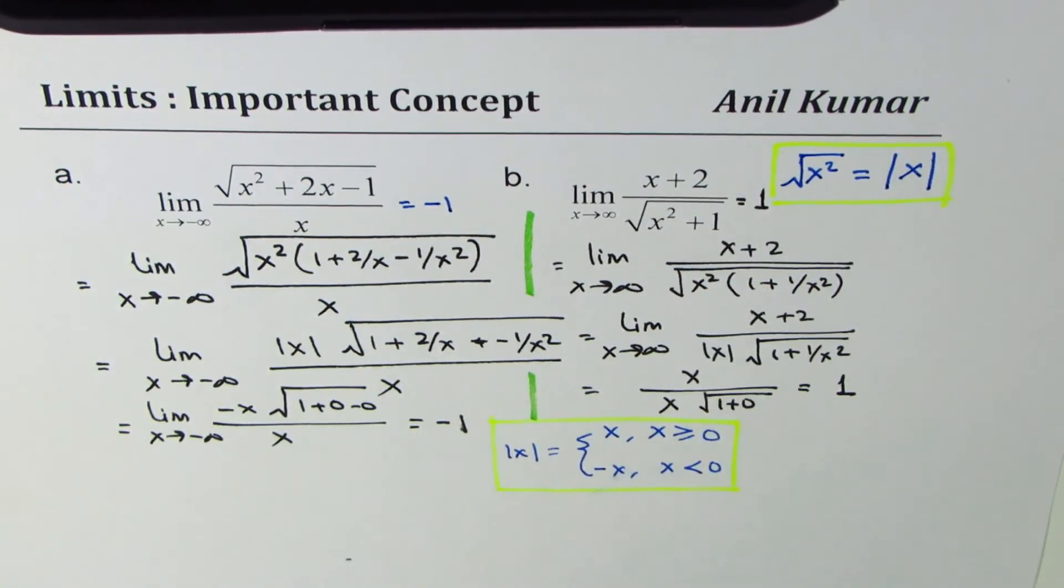So that is how you could get limit when x approaches a large number minus infinity or plus infinity for functions which involve square root of x squared. I hope this concept is well taken.